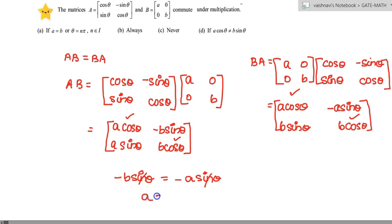we will take a12: -b sin theta is equal to -a sin theta. So A will be equal to B. That's condition 1. We have to find for theta now. So 2 sin theta should be equal to 0. Sin theta is equal to 0 when theta is equal to 0 or theta is equal to n pi. So the answer is option A: if A is equal to B or theta equal to n pi. At that condition, these two matrices will be commutative.